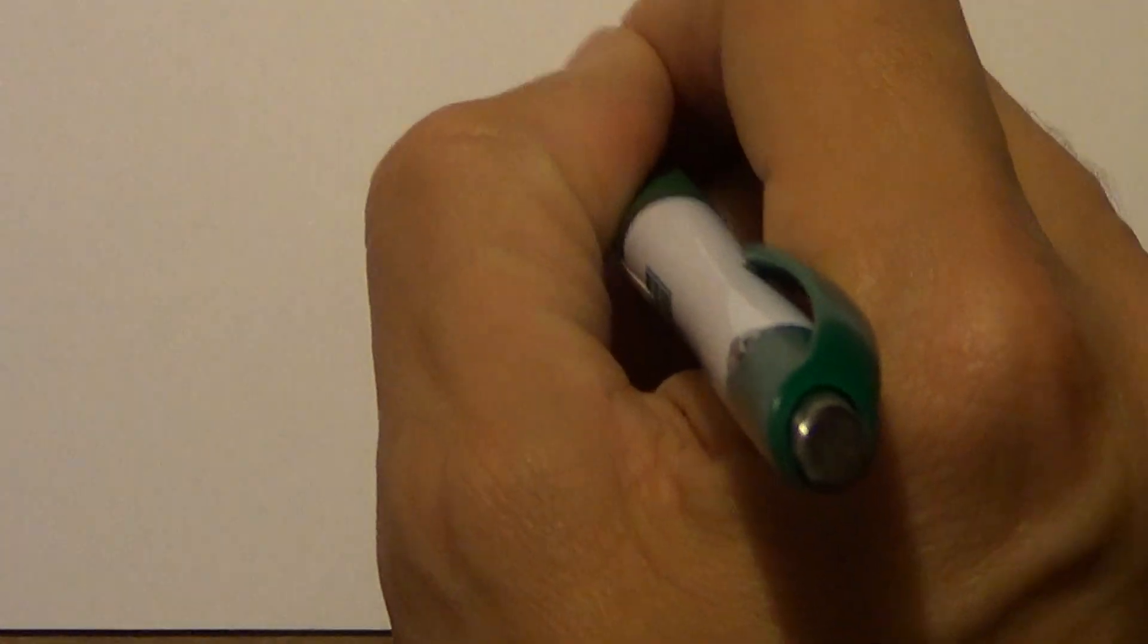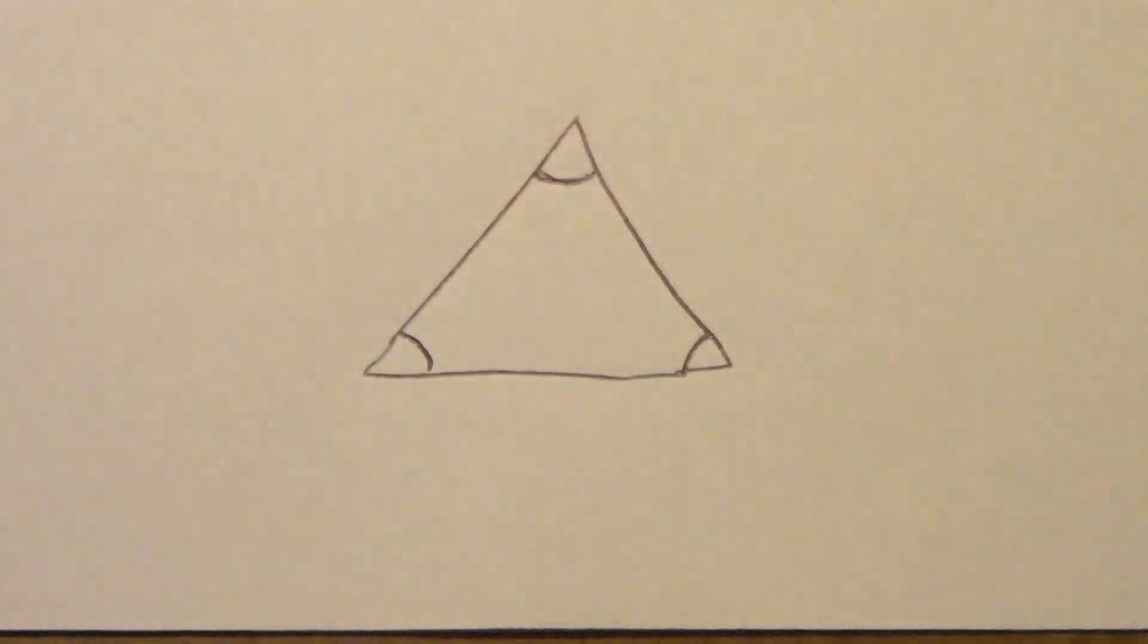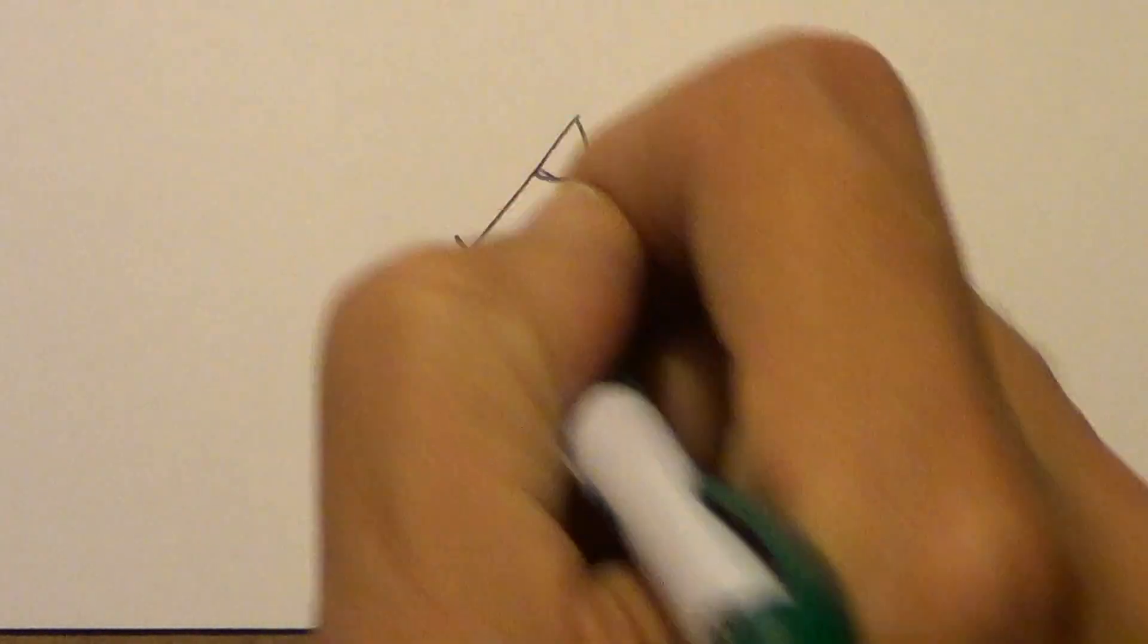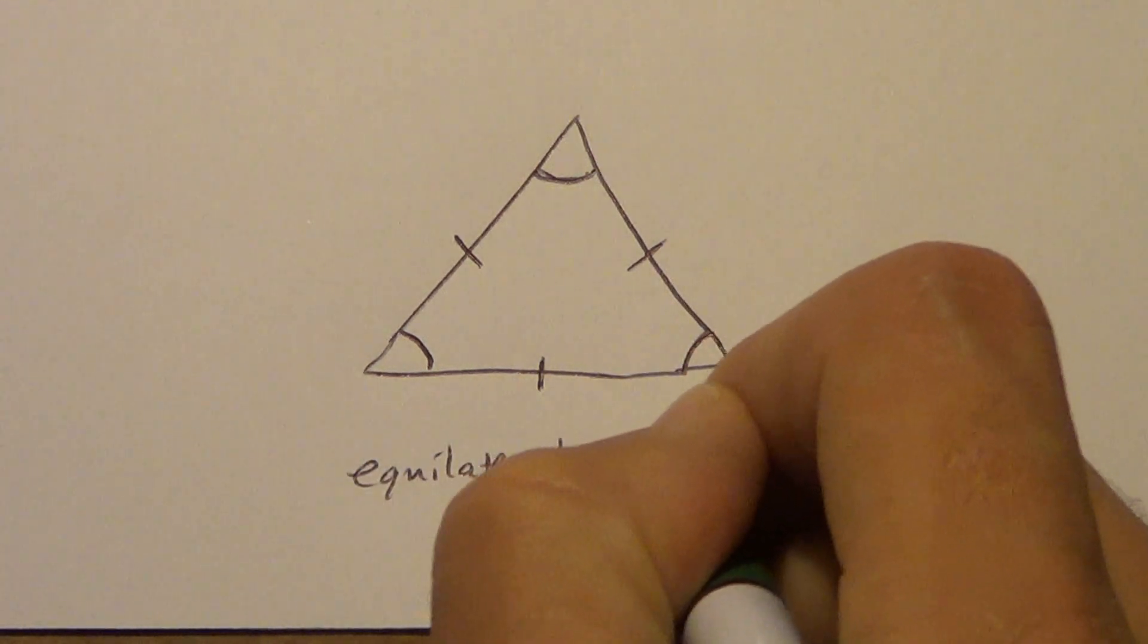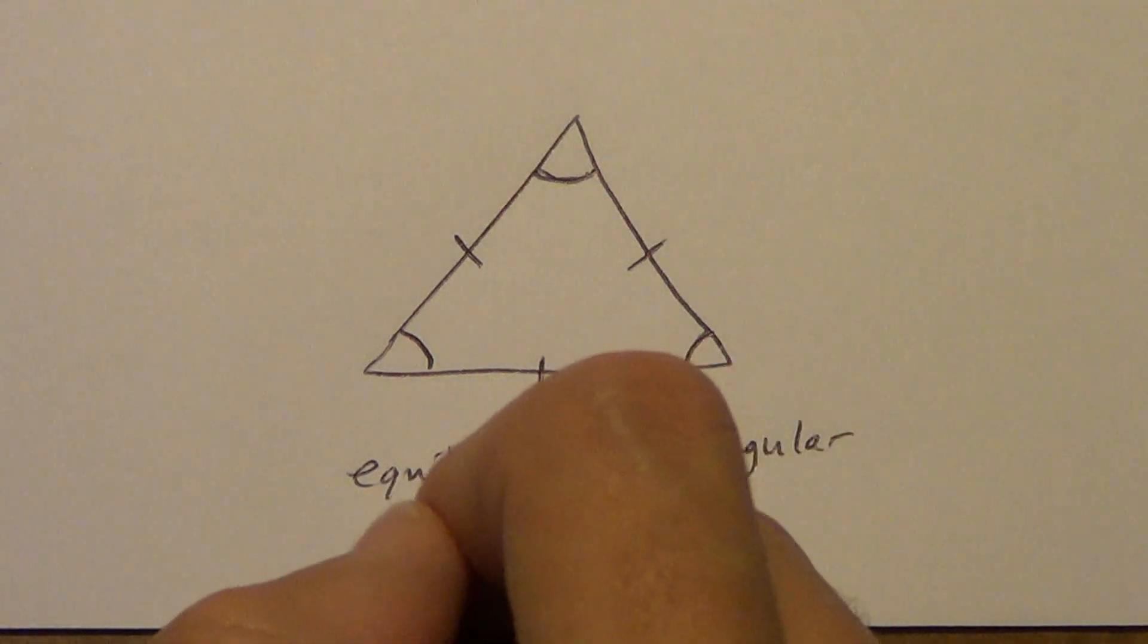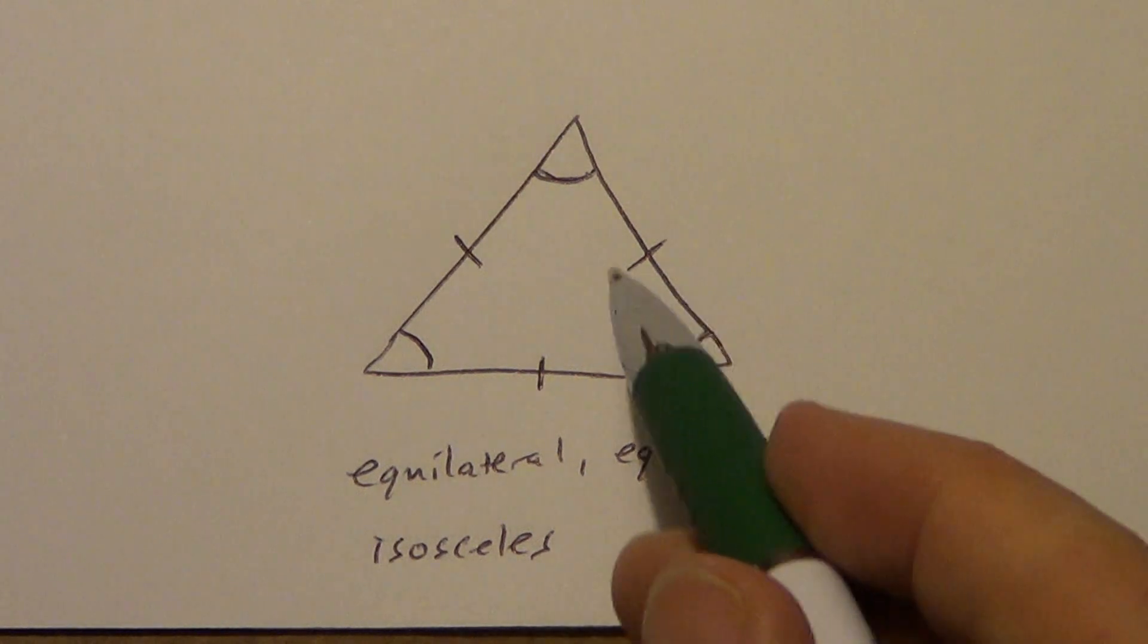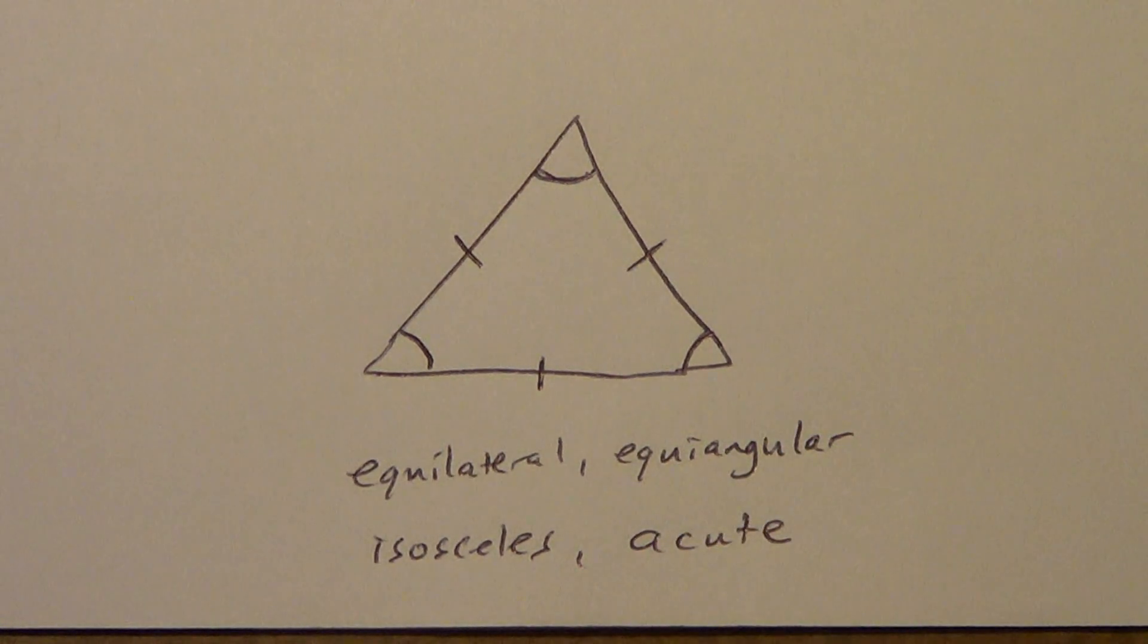All right. Now, what if we had something like this? Okay, so all those angles are congruent. Now, later on, we're going to learn why. But if all the angles are congruent, all the sides have to be congruent as well. So this one would be equilateral. It would be equiangular. It would also be isosceles. Remember, isosceles just means two or more congruent sides. This definitely has two or more. It's also acute. All three angles are acute angles. Okay. So this one would be all four.